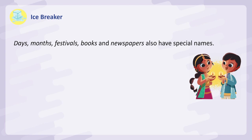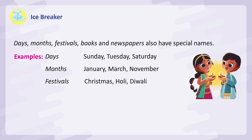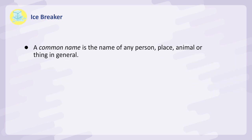Days, Months, Festivals, Books, and Newspapers also have special names. Examples — Days: Sunday, Tuesday, Saturday. Months: January, March, November. Festivals: Christmas, Holi, Diwali. Books: The Mahabharat, The Wizard of Oz. Newspapers: The Times of India, The Hindu.